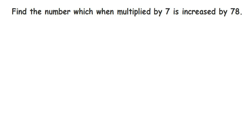Hey everyone, here's a question: find the number which when multiplied by 7 is increased by 78. This is a linear equation question. The number is unknown to us, so we're going to assume a variable. In this question, I'm going to assume the variable to be x.